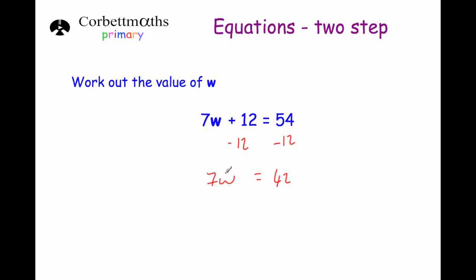This means 7 times w but we don't want to times by 7, so we divide by 7 on both sides. 7w divided by 7 is just w, and 42 divided by 7 is 6. So w equals 6. Let's test it: 7 times 6 is 42, plus 12 is 54. ✓